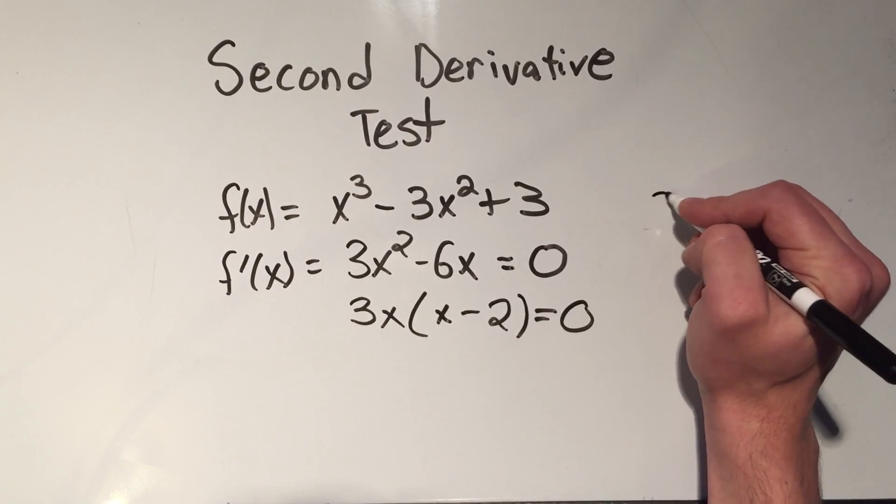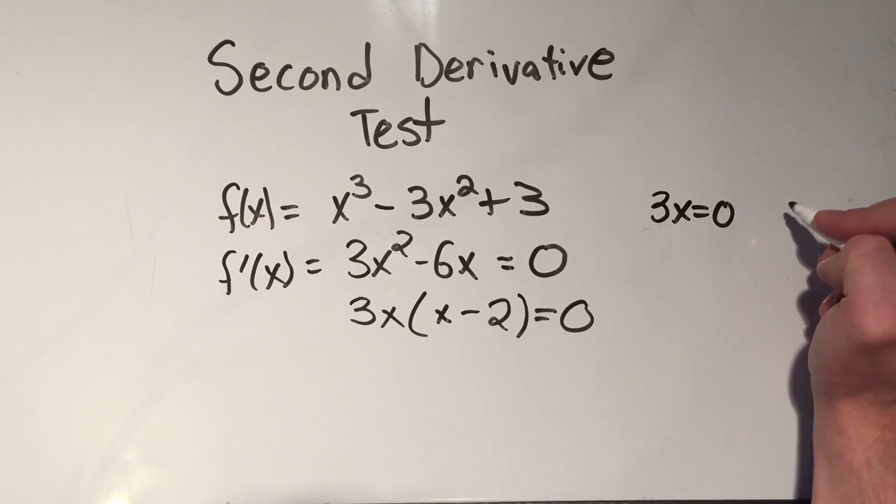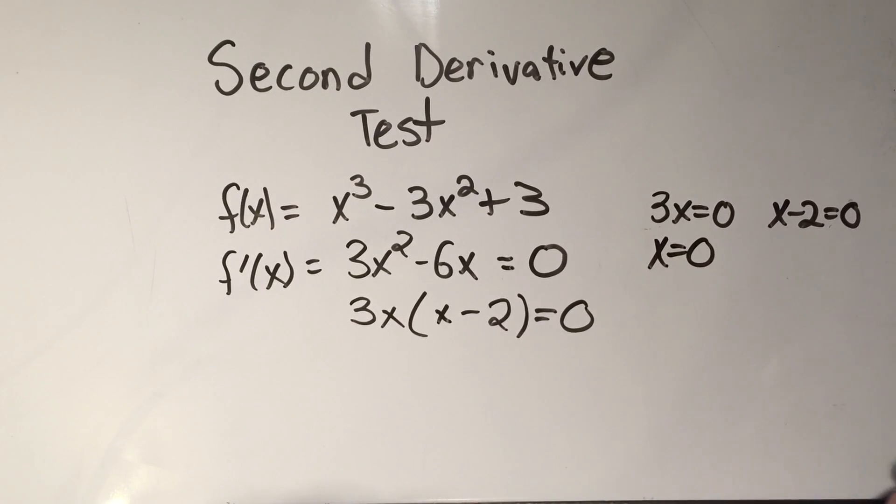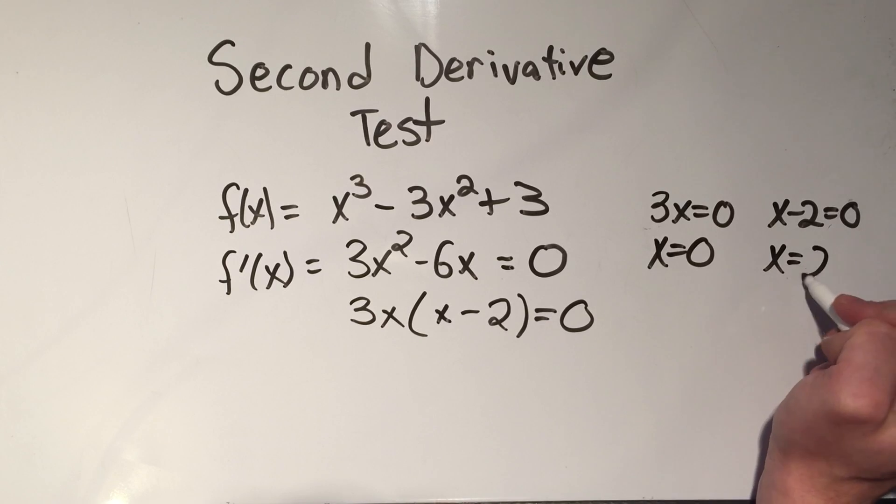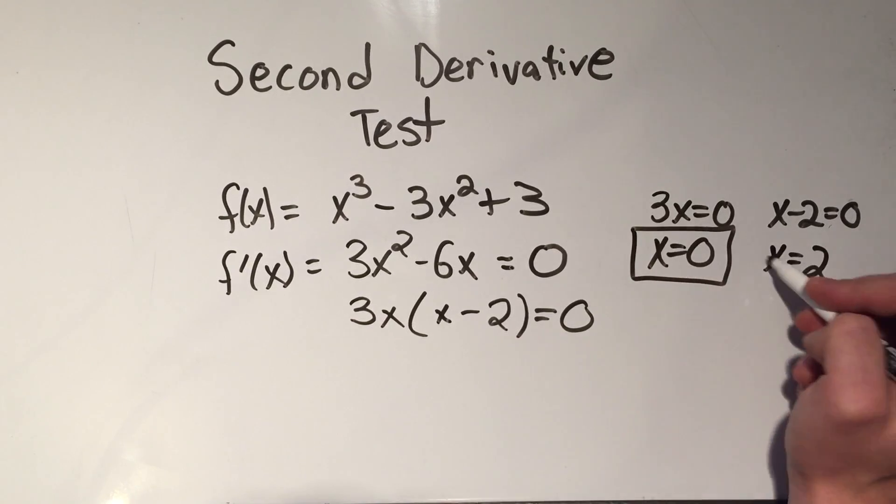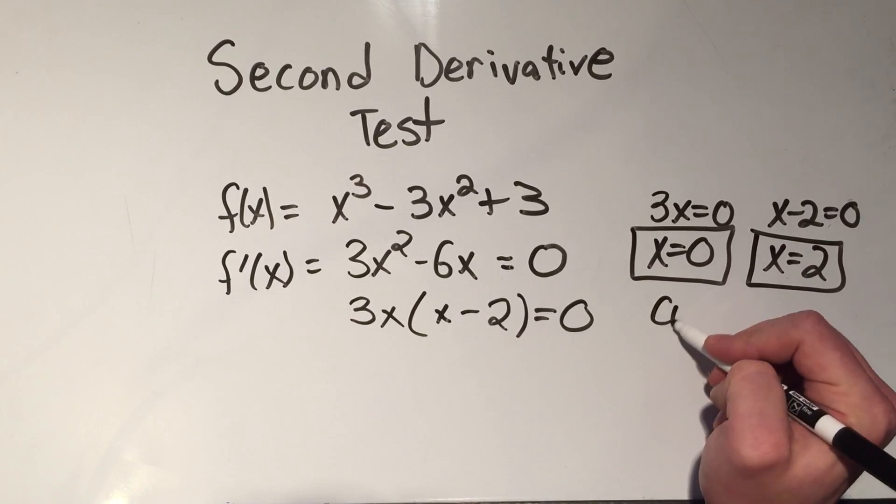And to solve that, I set each piece equal to zero. And I solve. So divide by 3, I get x equals zero. Add 2, I get x equals 2. These are my critical points.